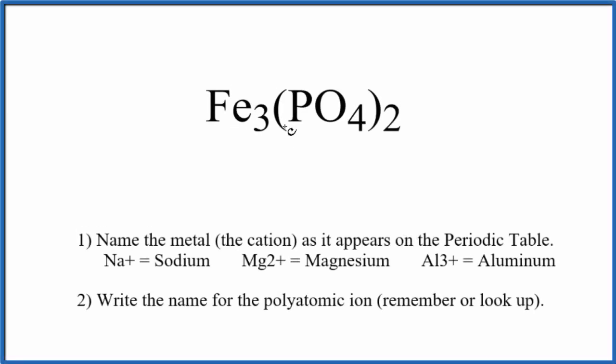To write the name for Fe₃(PO₄)₂, first we need to recognize we have a polyatomic ion here. This is the phosphate ion. In fact, we have two phosphate ions. So we have these two phosphate ions, and they're bonded to these three iron atoms.